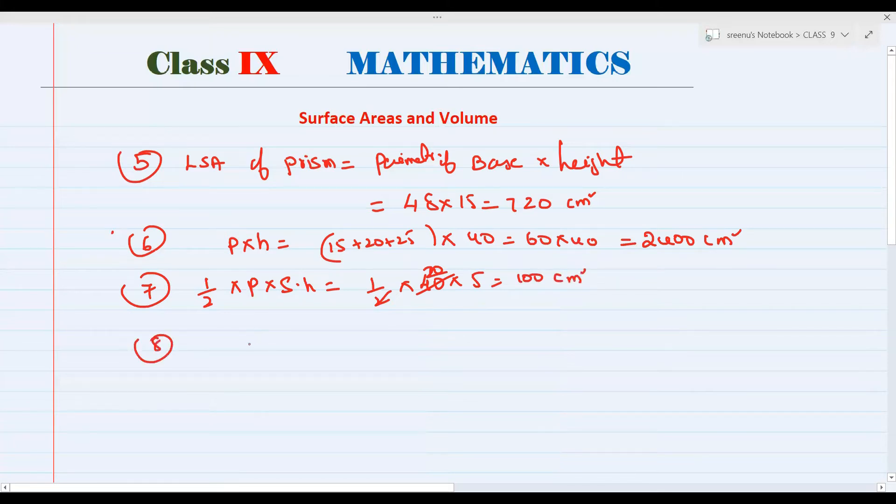And 8th. 8th, it was given like side, here is a triangular face. Base is given of side, but here perimeter we need to find. Side is 12 centimeters. Do you know how to find when side is given, the perimeter of the pyramid? By using side you have to find perimeter, and then again same rule, 1/2 into perimeter of the base into height.